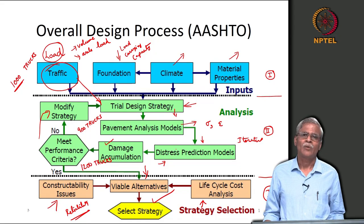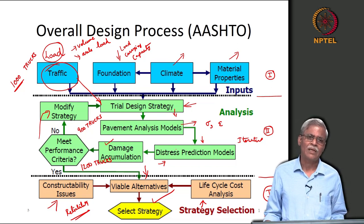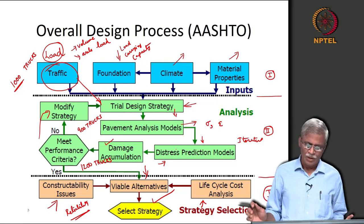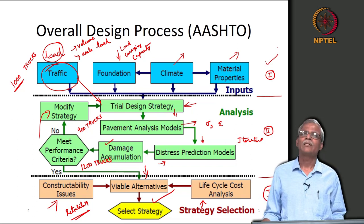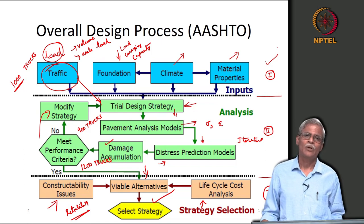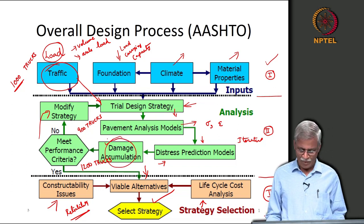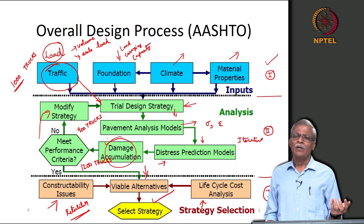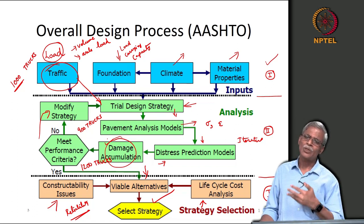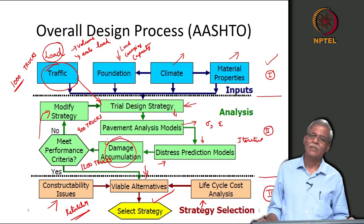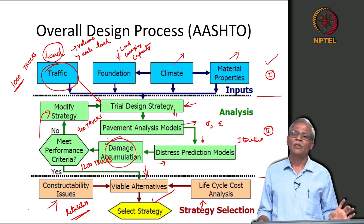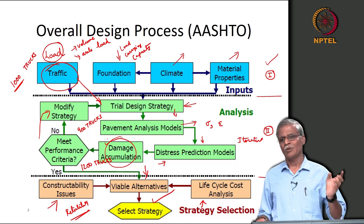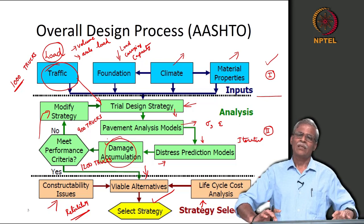Let us continue our discussion on the design process related to bituminous pavement. We will be talking about this as the bituminous pavement engineering design process. There are three steps: the first step is the inputs that you provide; the second step is the analysis to compute damage; and the third step covers reliability, lifecycle cost analysis, constructability, and pavement management. The actual design is completed in the first two steps.